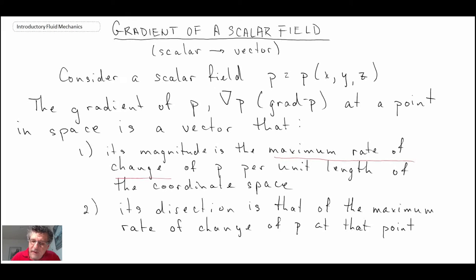And the second thing is that the direction of that new vector, grad P, is the direction of the maximum rate of change. So the magnitude is the maximum rate of change of that scalar in this coordinate system that we're dealing with through space.